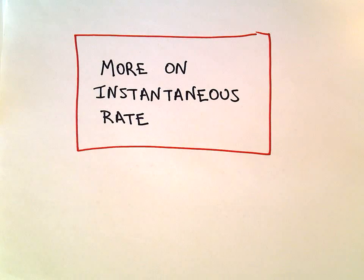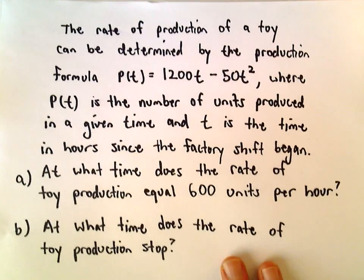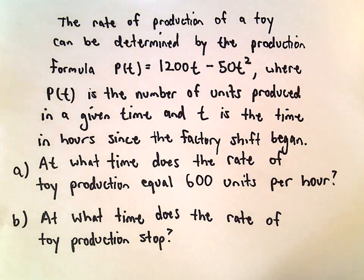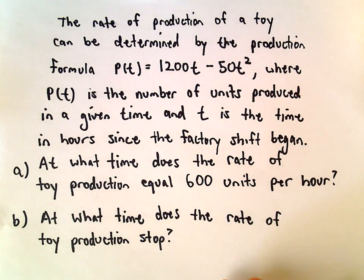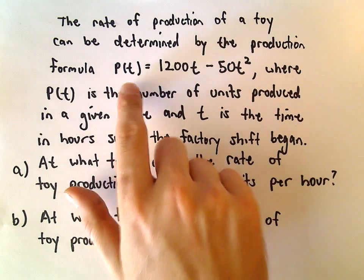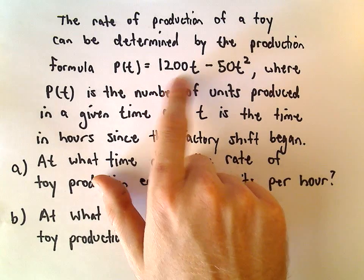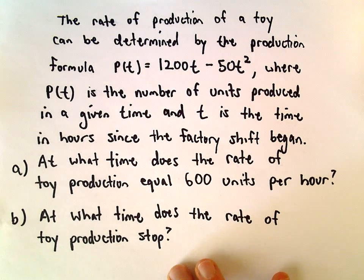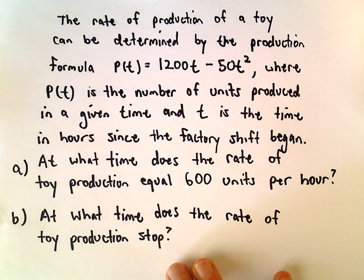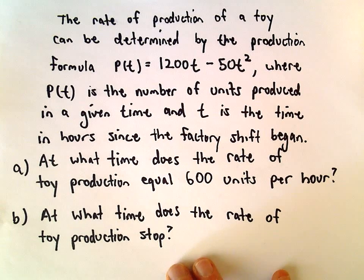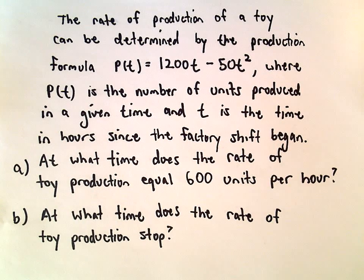Alright, in this video we're going to do another problem related to instantaneous rate. In this case we've got a little word problem here. The rate of production of a toy can be determined by the production formula P(t) = 1200t - 50t², where P(t) is the number of units produced in a given time, and t is the time in hours since the factory shift began.